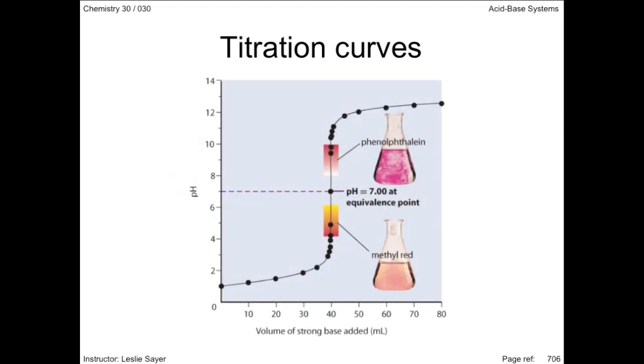This titration curve, taken from your text, is typical when a strong acid is titrated with a strong base. When the Erlenmeyer flask contains only a certain volume of strong acid, the pH is very low. The gradual addition of base will change the pH, but not to the extent you would think. This is due to the buffering capacity of the water.